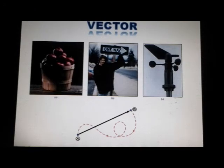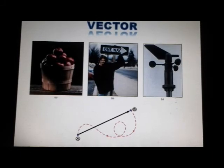In figure B, the lady is pointing to the right. A vector quantity is one that must be specified by both magnitude and direction.